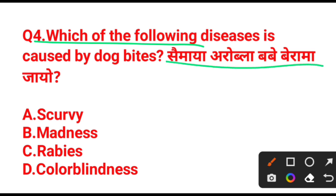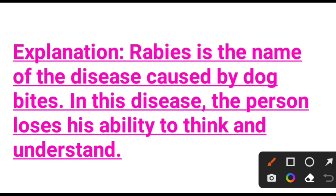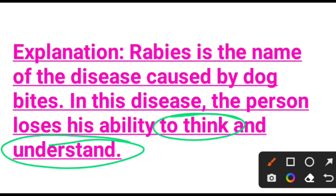Next question: which of the following diseases is caused by a dog bite? The options include rabies and color blindness. Option number C is the right answer — rabies. Rabies is the disease caused by a dog bite, and it requires treatment. This is how the disease spreads.